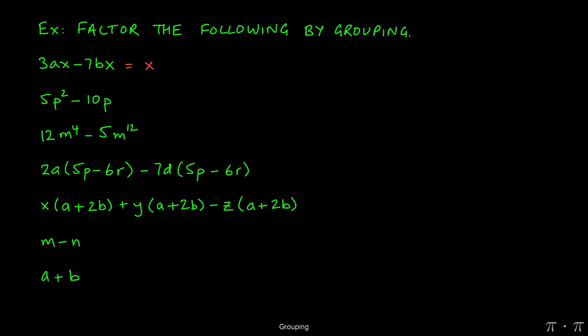Whenever we write down the GCF, the first task is always to open parentheses immediately after it. After we've done that, we figure out what goes inside the parenthesis block by dividing the terms by the GCF. So here we divide 3AX by X, the GCF, and we get 3A inside the parentheses.